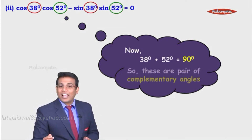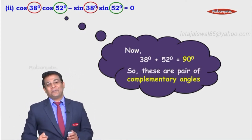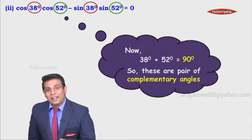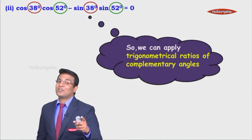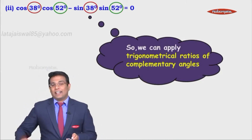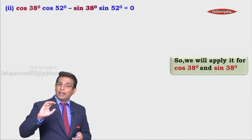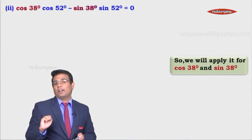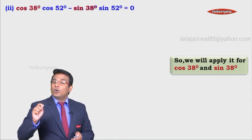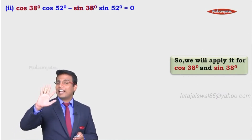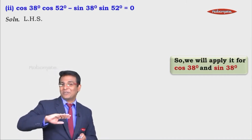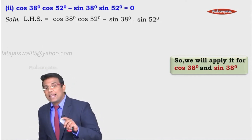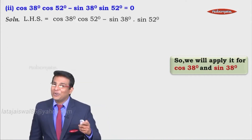That means these angles are a pair of complementary angles. Since they are a pair of complementary angles, we can apply trigonometrical ratios of complementary angles. Let's apply it now. We can apply it for cos of 38 and sin of 38. We'll select the left hand side: cos of 38 degrees into cos of 52 degrees minus sin of 38 degrees into sin of 52 degrees.